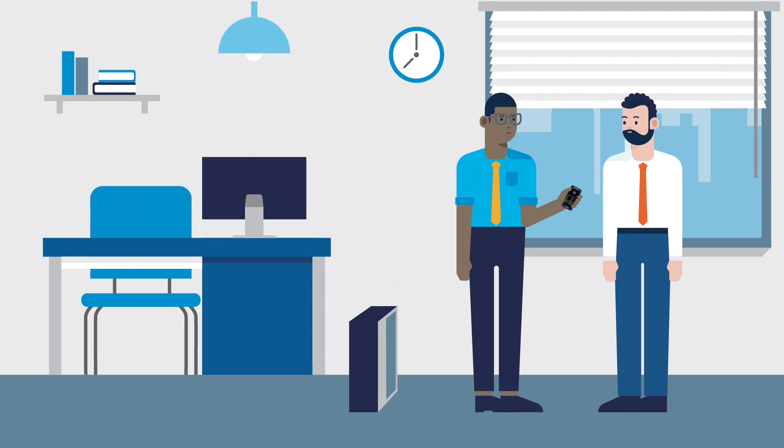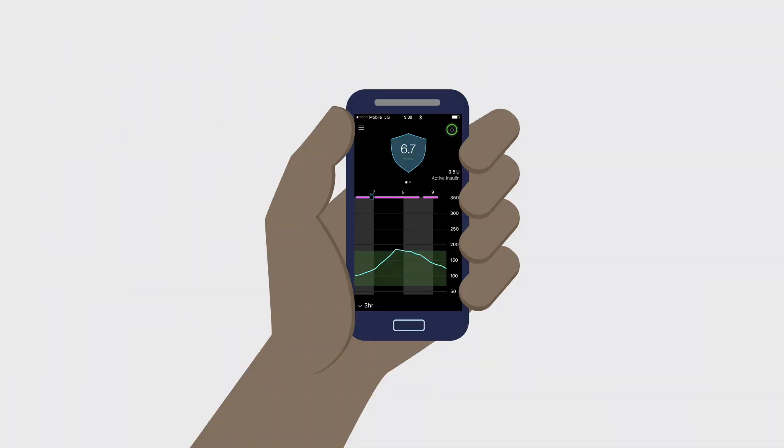Nick pulls out his cell phone and shows Marco the MiniMed mobile app. Using this app, Nick can see his pump's home screen and status on his phone. The app also notifies him of alerts or alarms triggered on his pump.